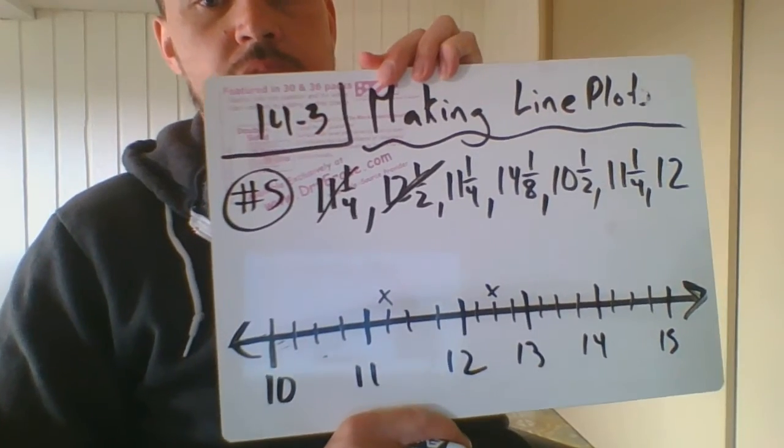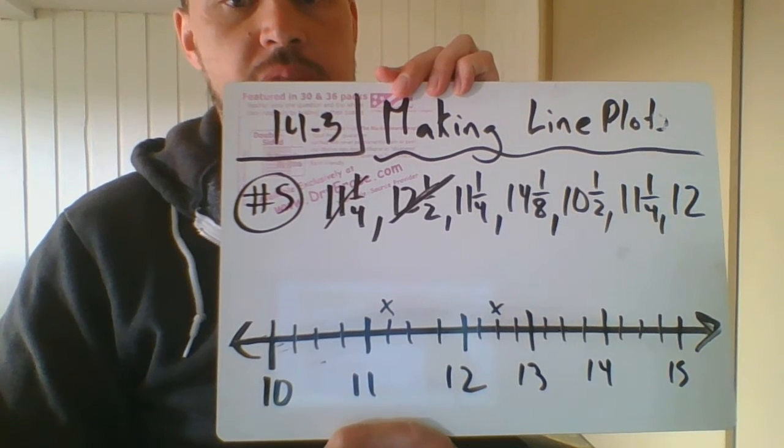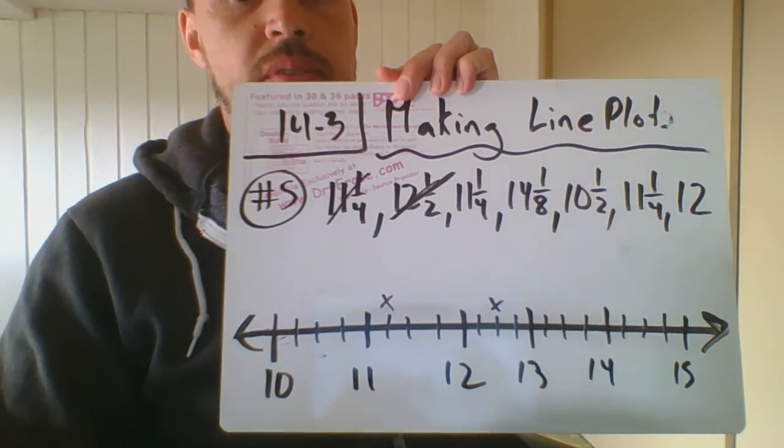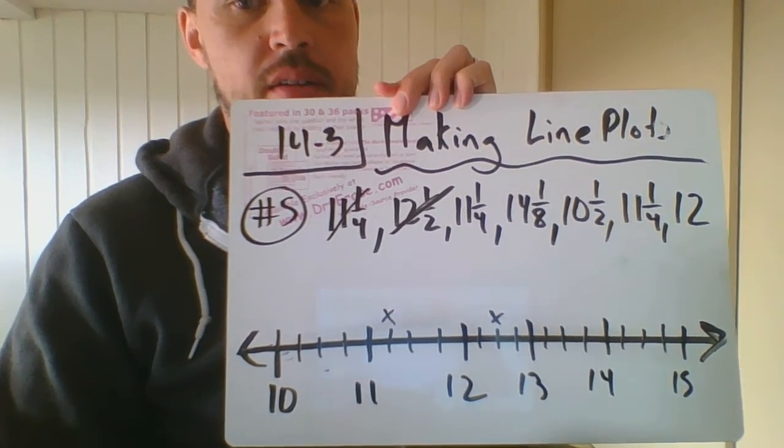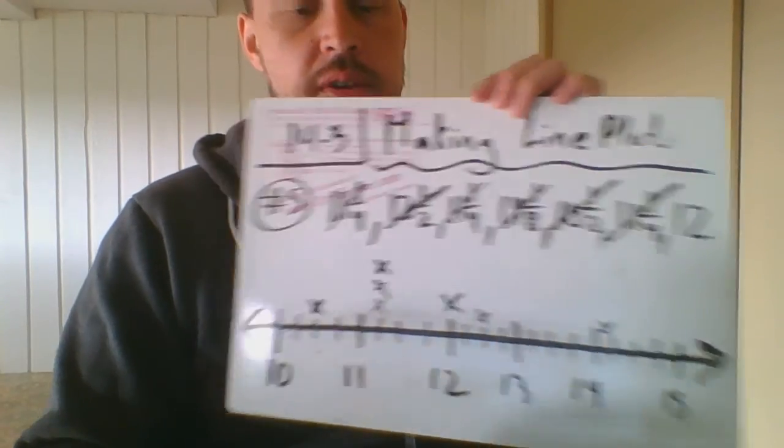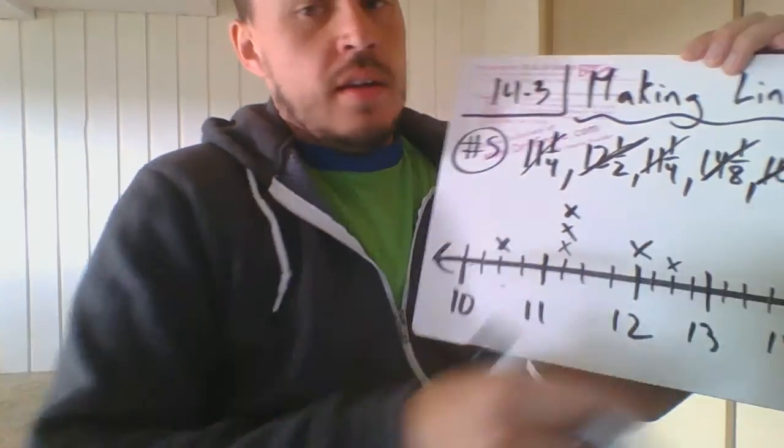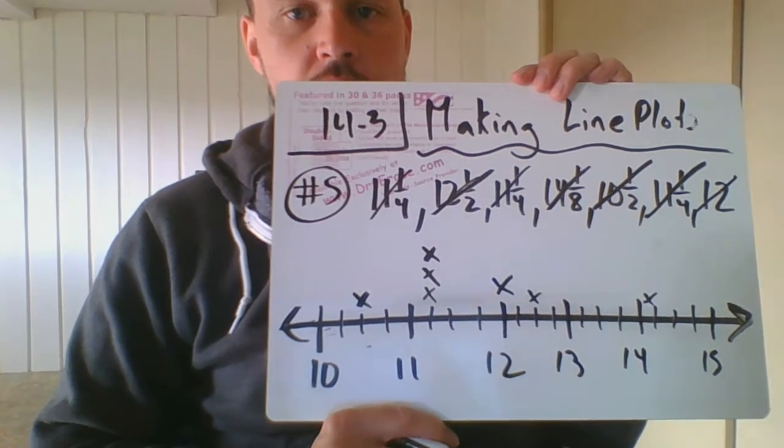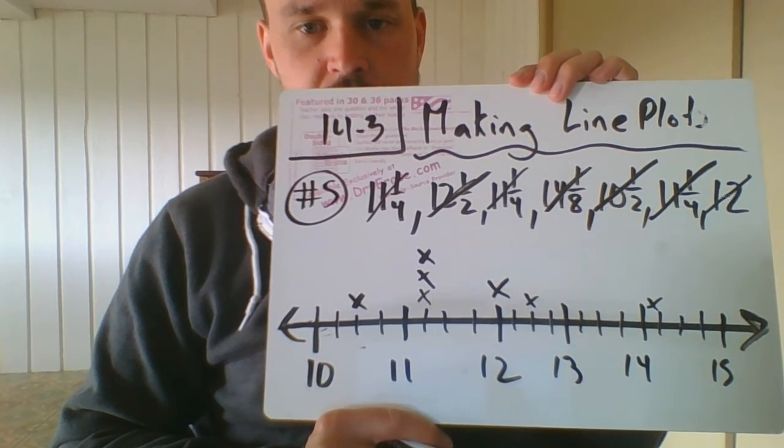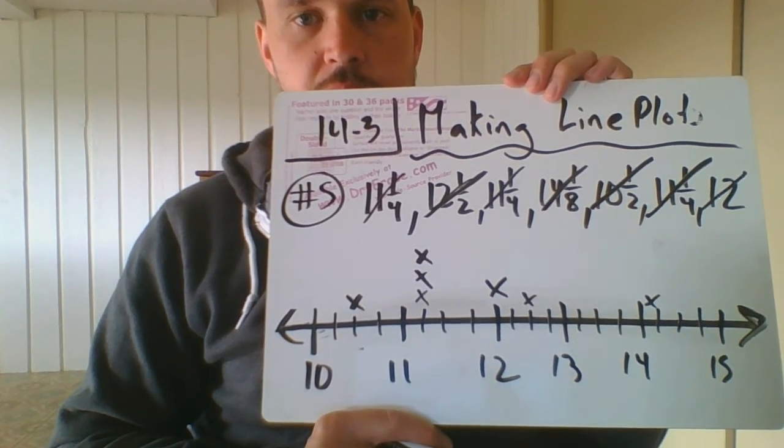Now I'm getting a little low on time on the video, but I marked down 11 and a fourth on the number line with an X and 12 and a half with an X on the number line. Okay, so I went ahead through the rest of the data, and I marked where all those numbers go. So you mark one at a time and cross them off, and that's how you create your line plot.